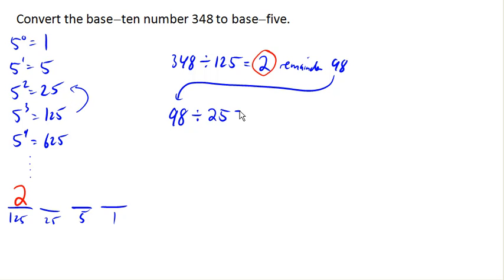So we got 98 divided by 25 goes in 3 times with a remainder of 3 times with a remainder of 23. And so 3 will be our value in the 25's place.